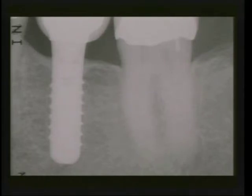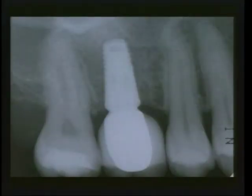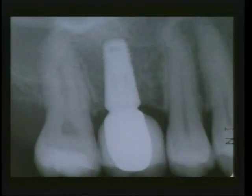Science has given us the ability to achieve osseointegration and maintain bone levels at the rough-smooth border junction. The exciting topic of platform switching — or medialization of the connection — is showing us over time that we can do things beyond the expected bone loss to the first thread. The science and predictability is there. What we're going to focus on today is the peri-implant tissues and how we can protect those tissues from change over time, so we don't end up with subsequent recession that can destroy an aesthetic outcome in the aesthetic zone.